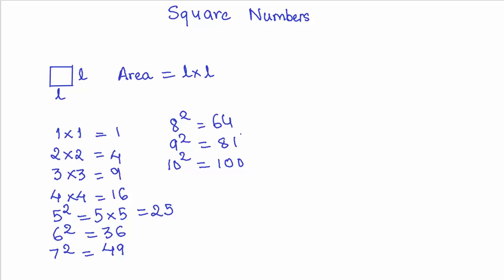Now if you look at all these numbers which we've obtained by multiplying a number with itself - 1, 4, 9, 16, 25, 36, 49, 64, 81, and 100 - all these numbers can be represented as a product of some number multiplied by itself.